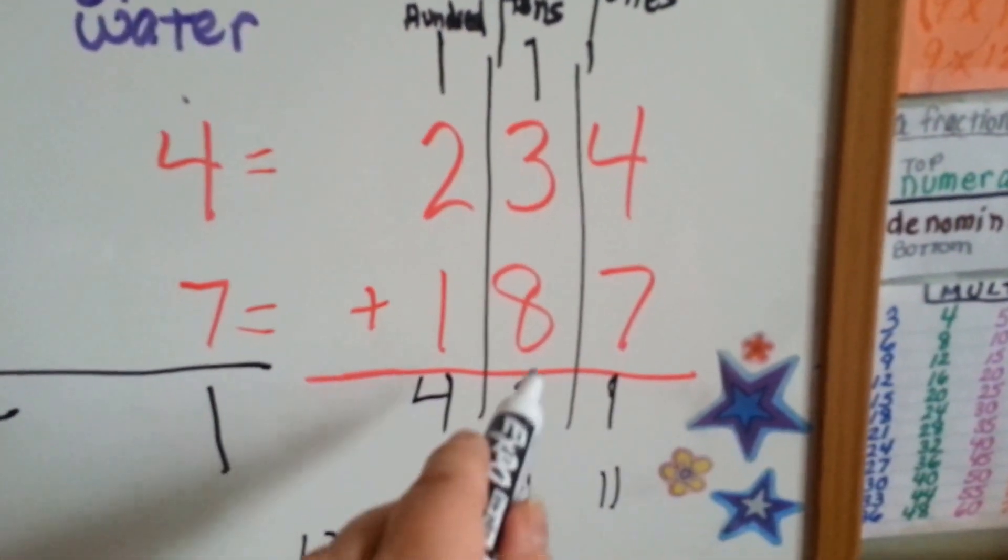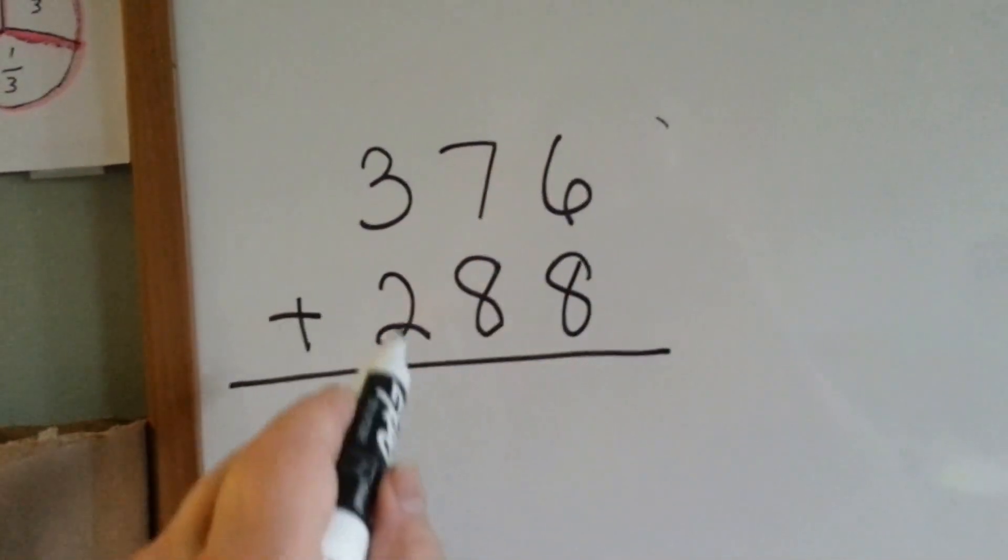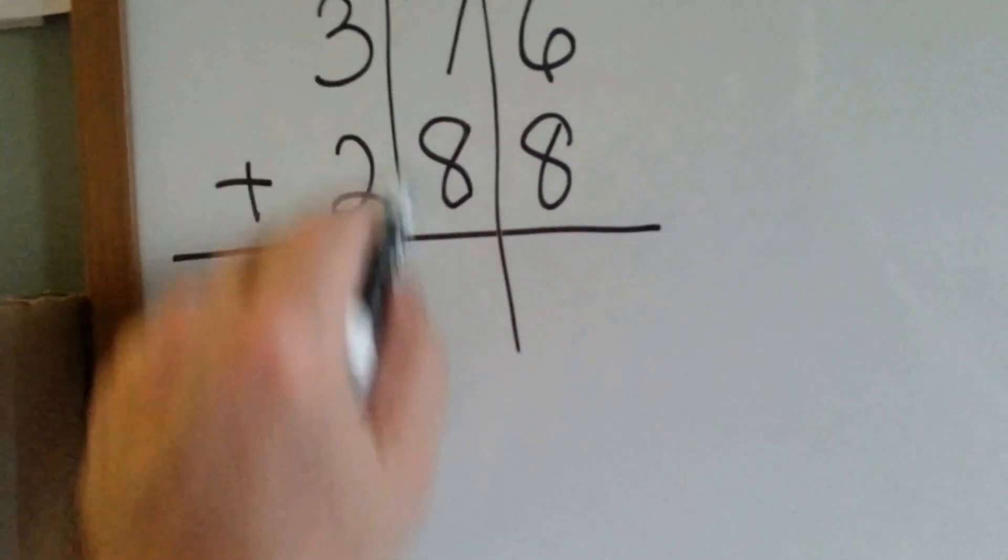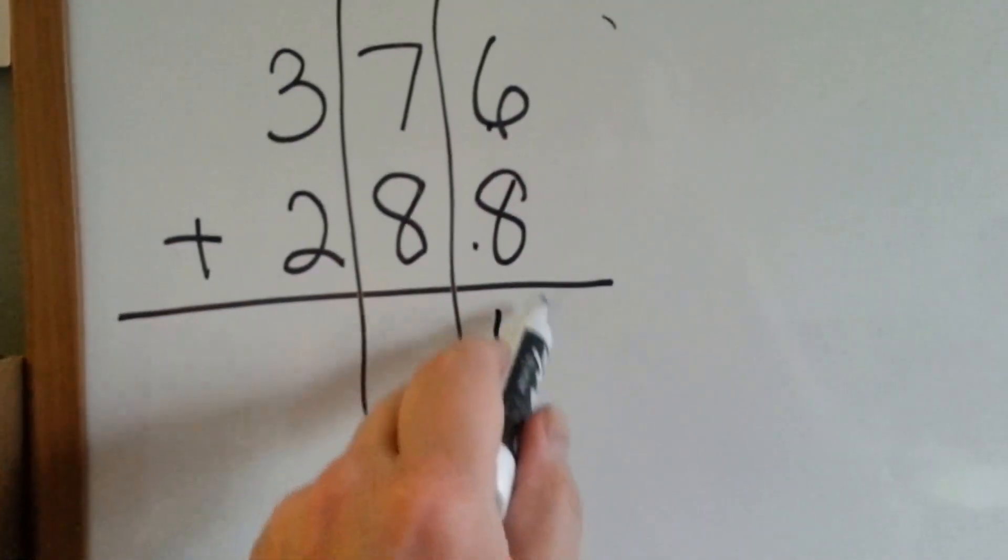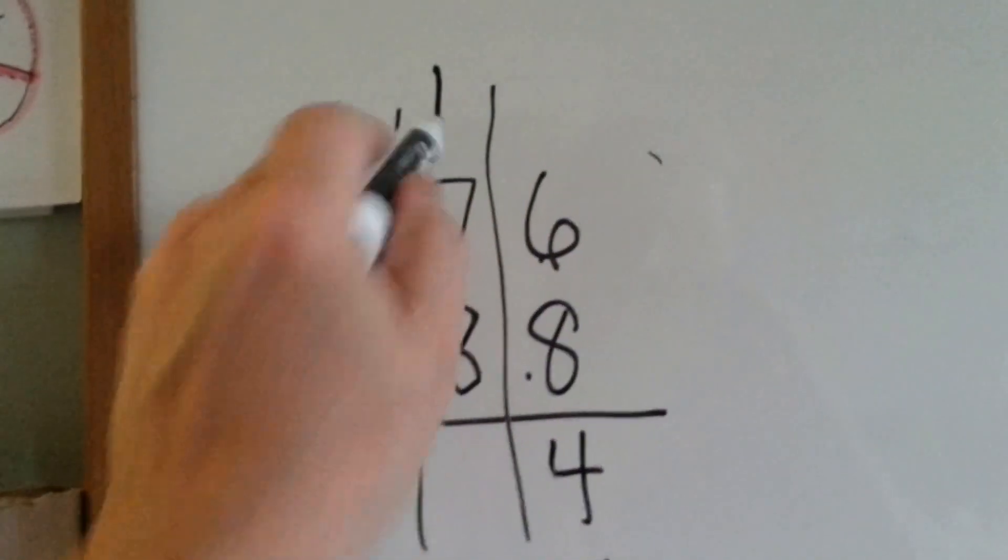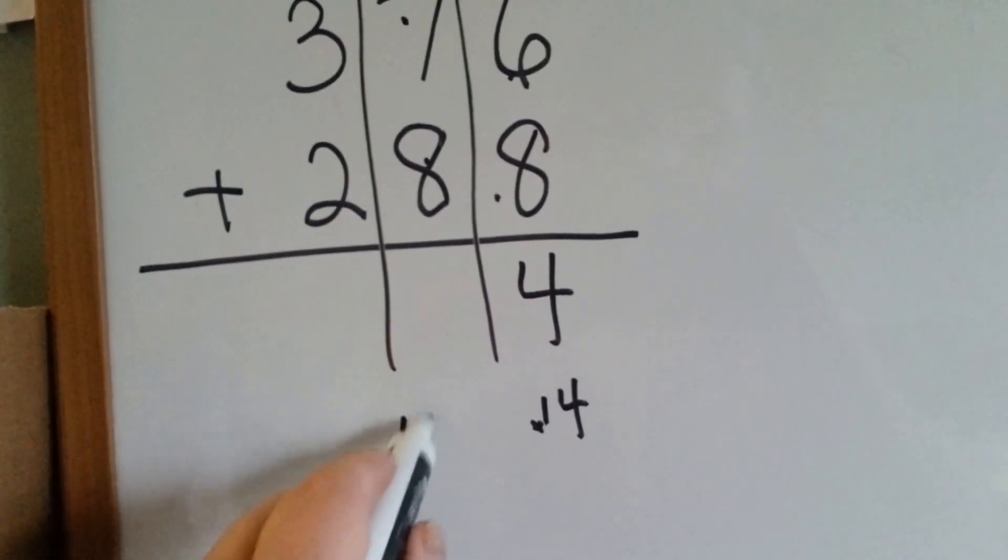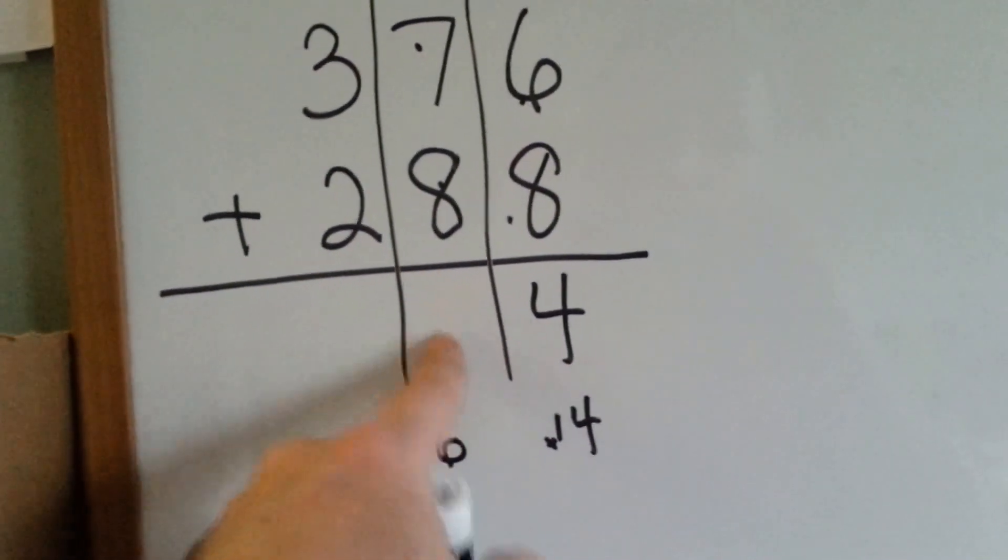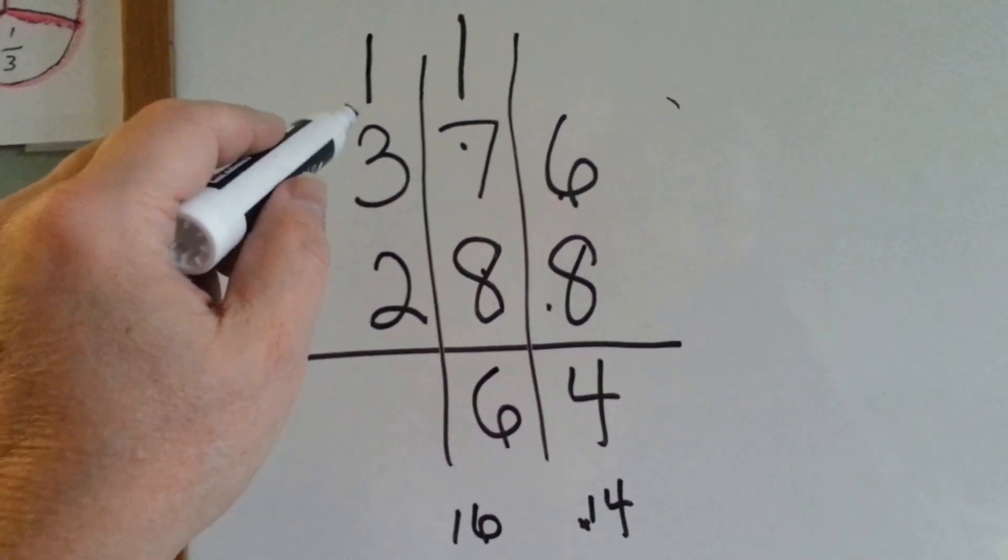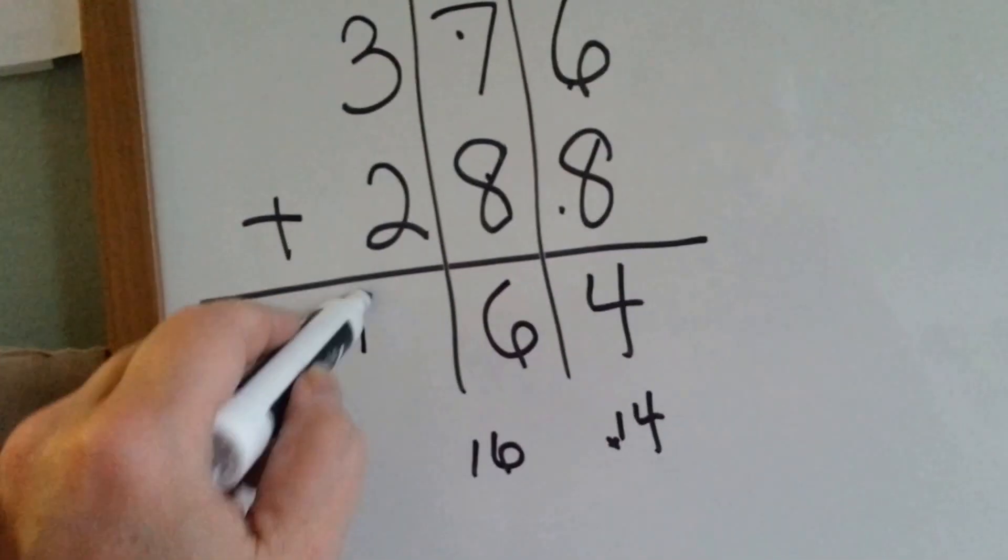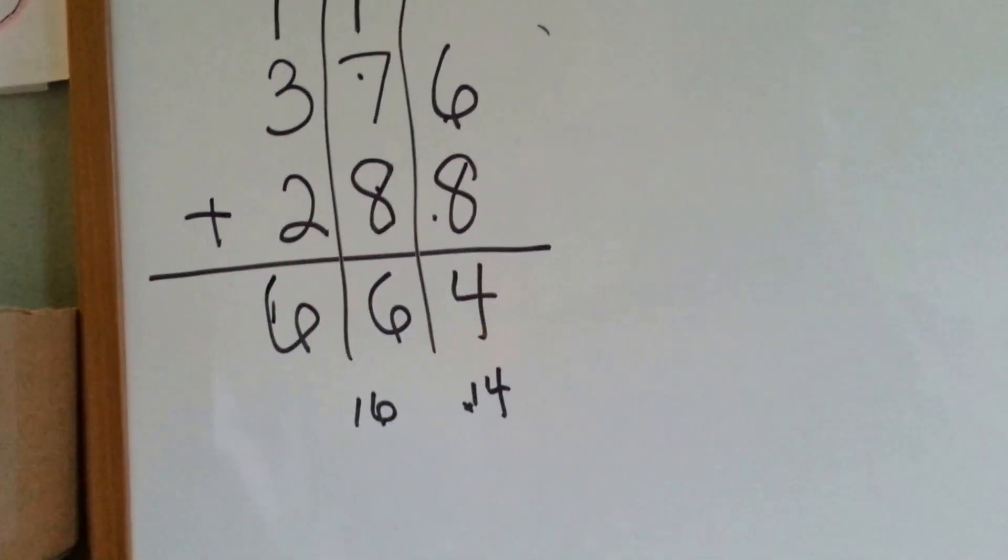376 plus 288. Remember, we can only put one number in each column. 8 plus 6 is 14. We can only put the 4 here. And this 1 has to be carried over into the tens column. 8 plus 7 is 15. And one more is 16. We can't put both digits here for the 16. So, the 6 is going to go here, and the 1 is going to be carried over. And we always remember to count the carryover number. 1, 2, 3, 4, 5, 6. So, 376 plus 288 is 664. And we carried over 2 times.